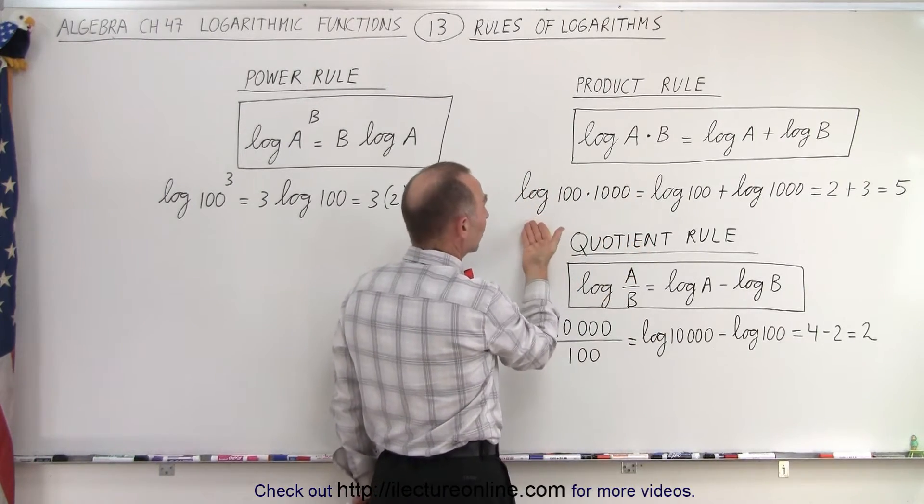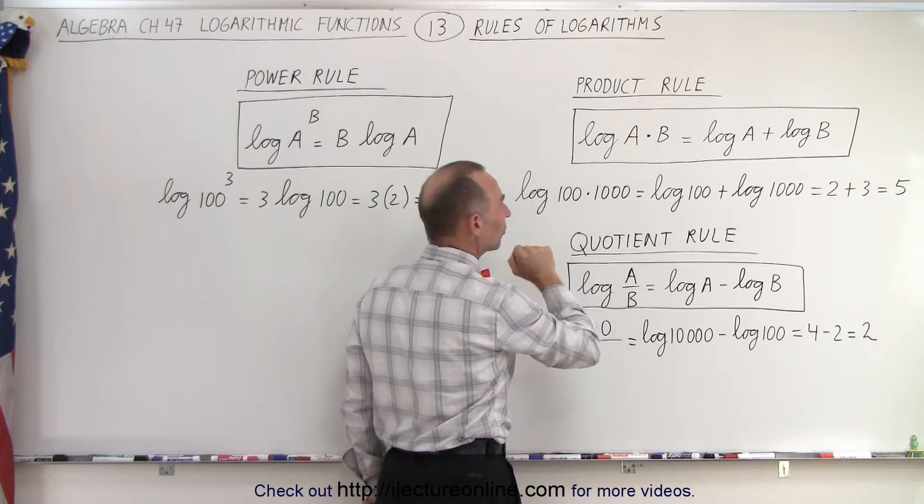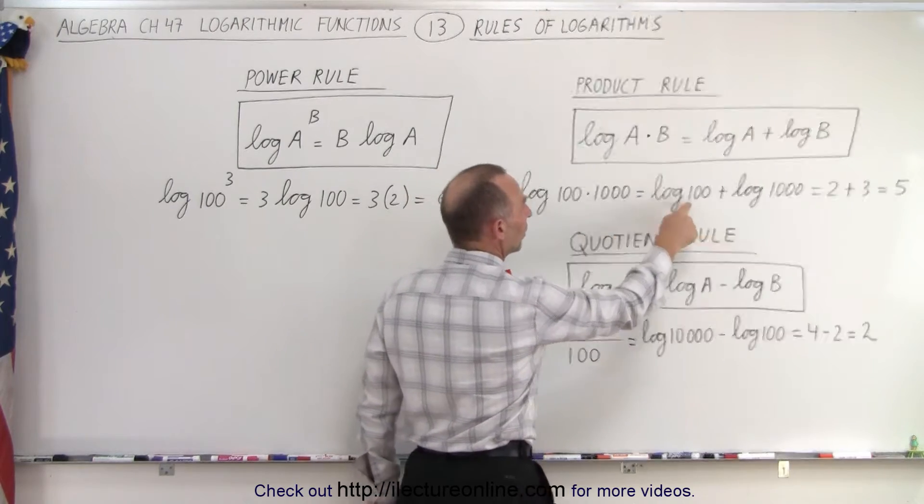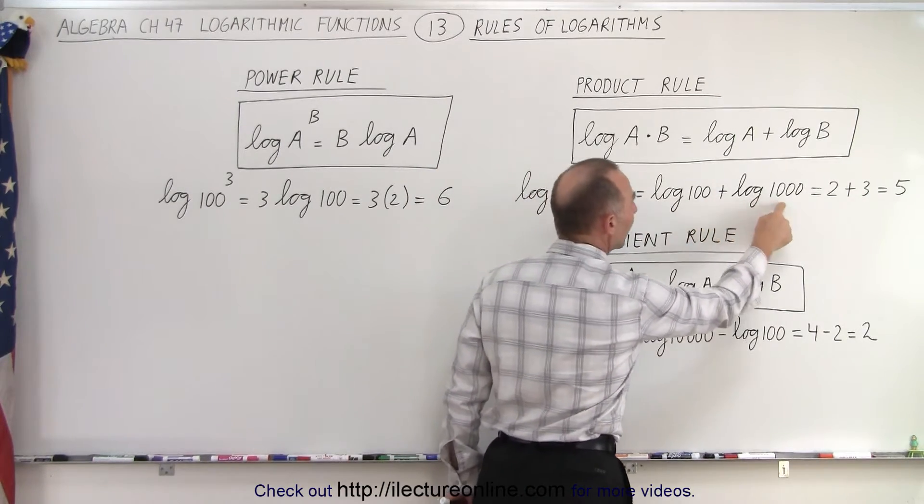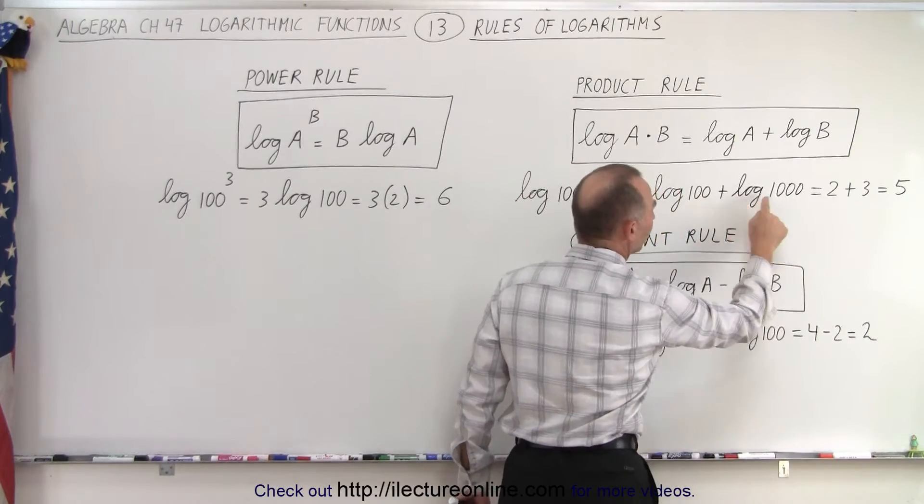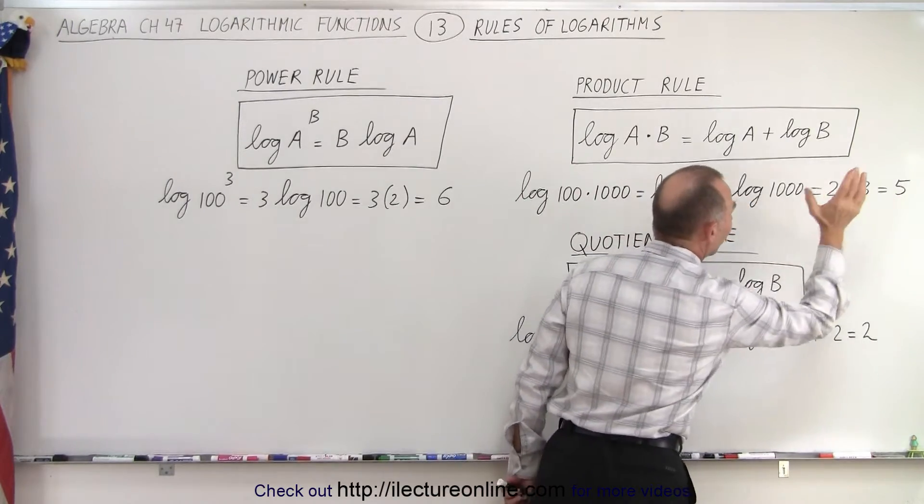An example of that is right here. The log of 100 times 1,000 is equal to the log of 100 plus the log of 1,000. The log of 100 is 2, the log of 1,000 is 3, 2 plus 3 is 5.